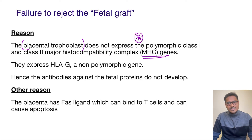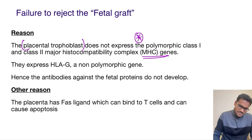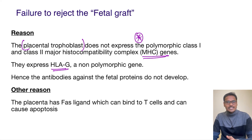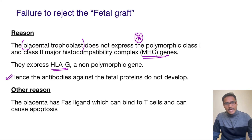So if the placental trophoblasts are not expressing MHC genes, there are less chances of immune reactions against the fetus. In addition, they express HLA-G, which is a non-polymorphic gene. Because of these reasons — MHC1 is not there, MHC2 is not there — there are no immune reactions against the fetus.